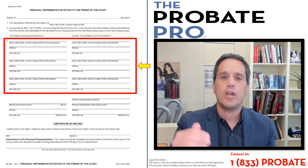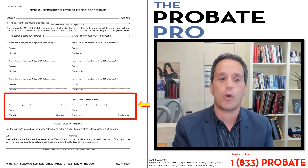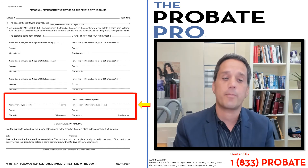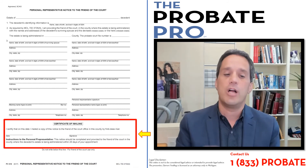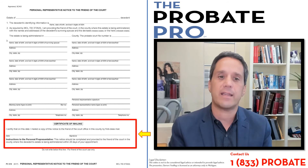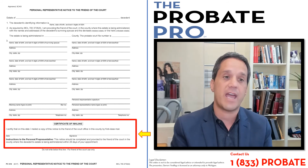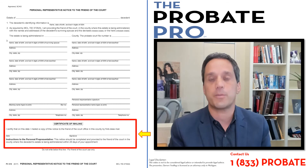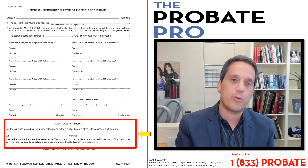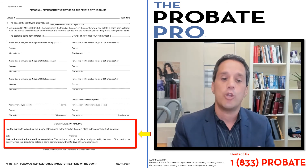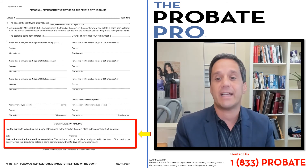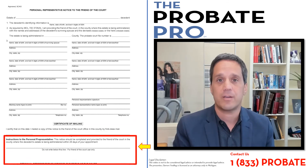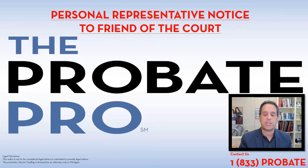The lower section of this particular court form identifies the personal representative as well as any attorney representing the estate or the personal representative. The bottom section is really critical: you must fill out the certificate of mailing to show that you fulfilled your responsibility under the statute, because when you go to close the probate estate, this notice — as well as the other noticing requirements — you have to show proof that you complied with your responsibilities as the personal representative.